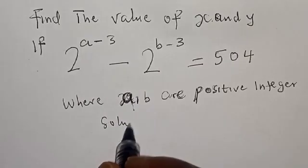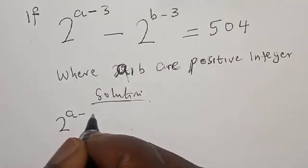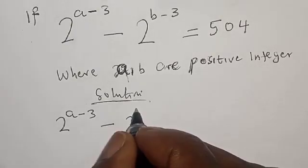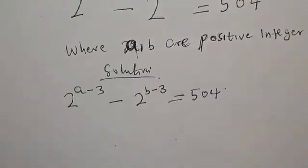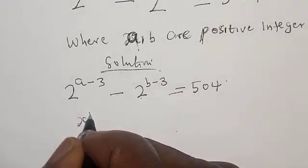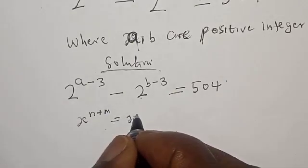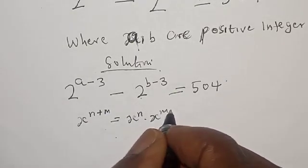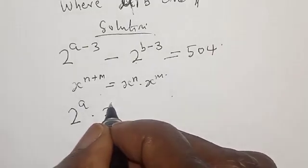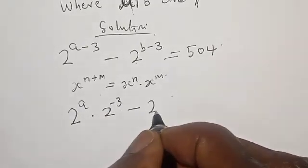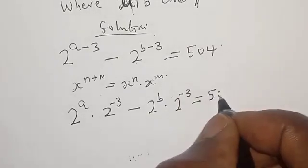We have 2 raised to power a minus 3, minus 2 raised to power b minus 3, equal to 5/4. Remember, if you have s raised to power n plus m, that is the same as s raised to power n multiplied by s raised to power m. Therefore, our equation becomes 2 raised to power a multiplied by 2 raised to power minus 3, minus 2 raised to power b multiplied by 2 raised to power minus 3, equal to 5/4.